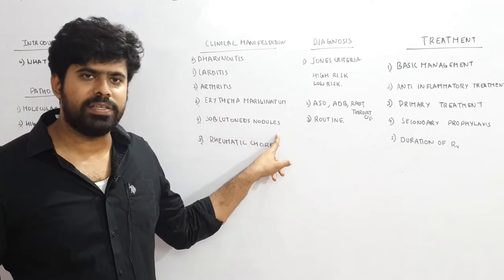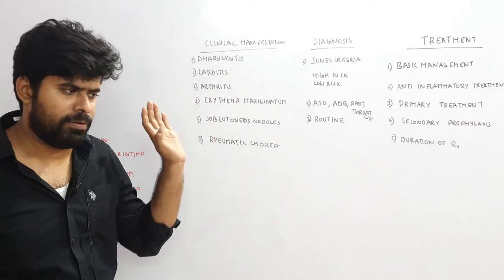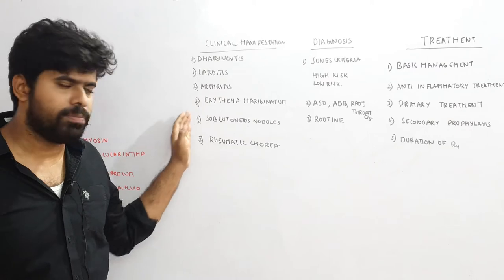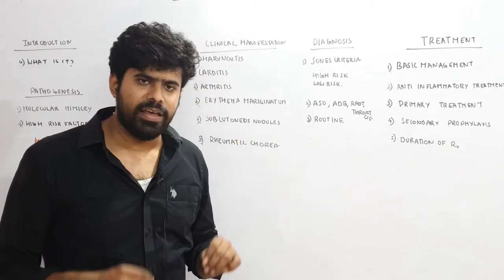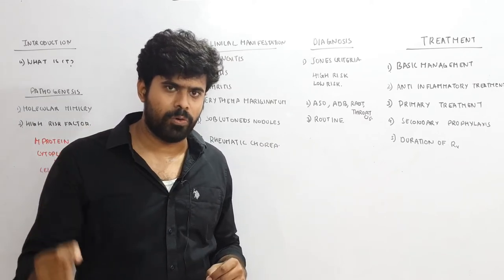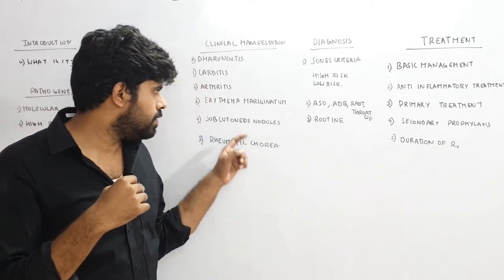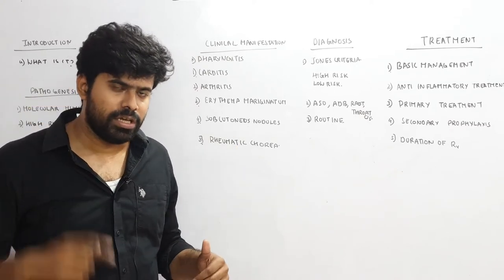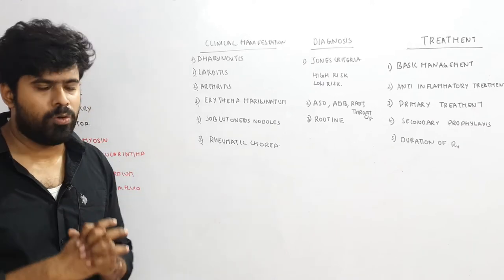Whereas the subcutaneous nodule is a late manifestation. Carditis, arthritis, and erythema marginatum are all early manifestations, appearing within one week to one month. Subcutaneous nodules and rheumatic chorea are late manifestations. Subcutaneous nodules can be pinhead or almond-sized nodules present over the surface of bones — they indicate severe carditis. They can be seen over the extensor aspect of the shin, the tibial surface, the occiput, the spine, and over the elbows.